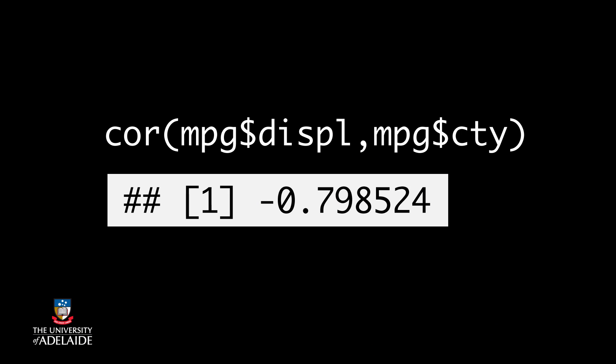You can compute the Pearson correlation in R using the cor function. For example, if we wanted to compute the correlation between engine size and city fuel efficiency in the MPG dataset, we'd type this to get negative 0.8, a strong negative relationship.